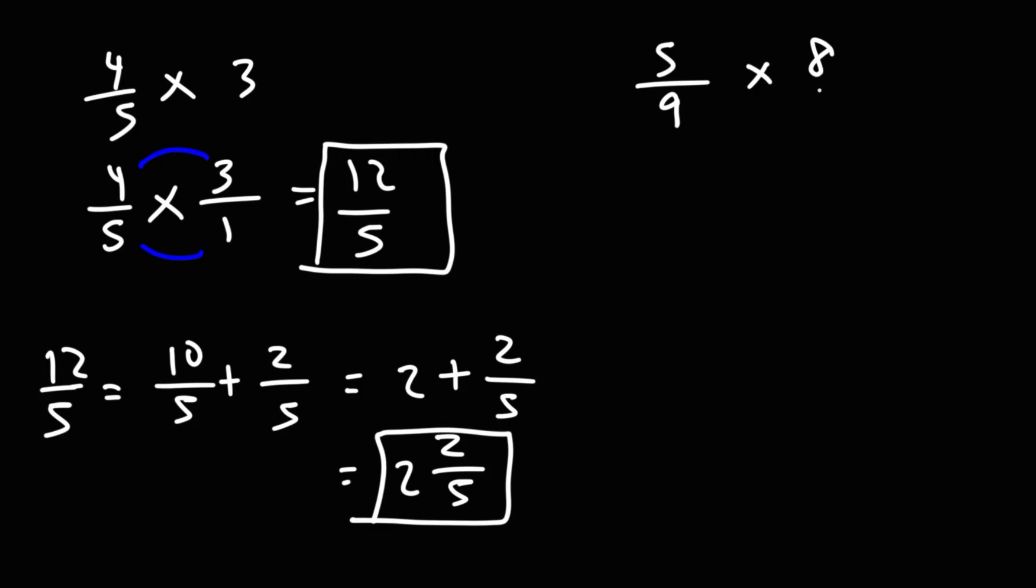For the next example, 5/9 times 8, let's put 8 as a fraction, 8/1, and let's multiply across. 5 times 8 is 40, and 9 times 1 is 9. So the answer as an improper fraction is 40/9.